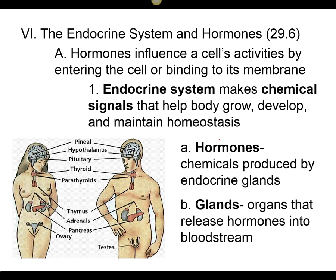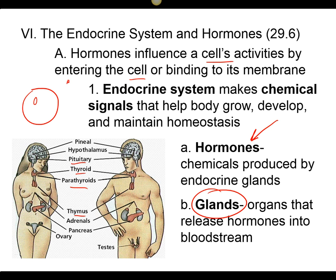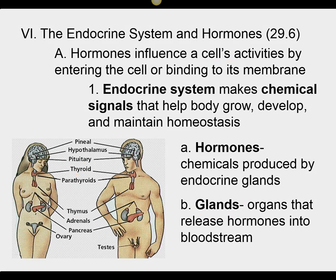The endocrine system is where we make chemicals called hormones, and they're secreted by glands. Hormones are chemicals that can influence a cell's activity by either entering into the cell and causing some sort of change, or by bonding to a receptor and then causing some sort of response inside of that cell.